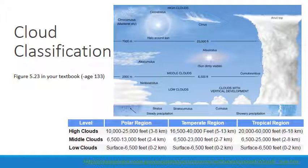In 1803, an English naturalist named Luke Howard published a cloud classification scheme that serves as the basis of our present-day system. According to Howard's system, clouds are classified on the basis of two criteria: form — what they look like — and their height — how high they are above the ground. We'll look at the basic cloud forms or shapes first, and then examine the cloud height.